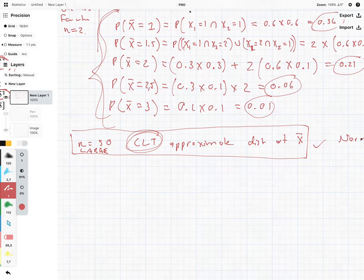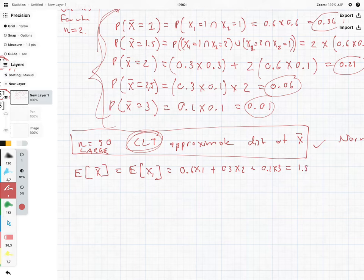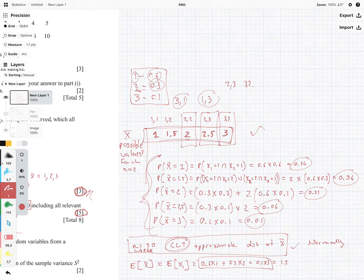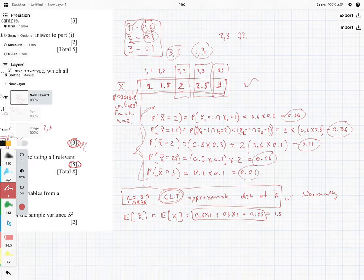The first thing we need to do is find our expected value for x bar. We know the expected value of one of them is 0.6 times 1 plus 0.3 times 2 plus 0.1 times 3, and this gives us 1.5. What I'm basically doing is taking each of these values, multiplying it by the probability, and adding them all up together.